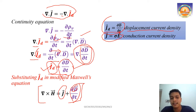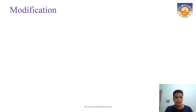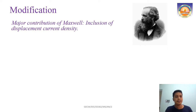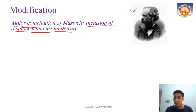Once again, the modified fourth Maxwell's equation is del cross H equals J plus ∂D/∂t. Maxwell's contribution was to include the displacement current density. Maxwell was fundamentally a mathematician, and during his time this concept was purely mathematical — he added the displacement current density because he understood that del cross H equals J is invalid for time-varying fields, and added a term to satisfy the continuity equation.